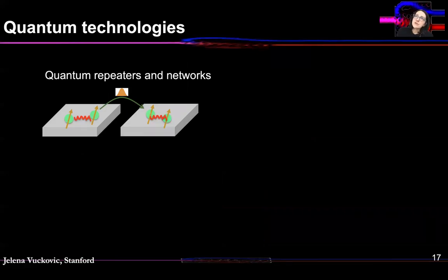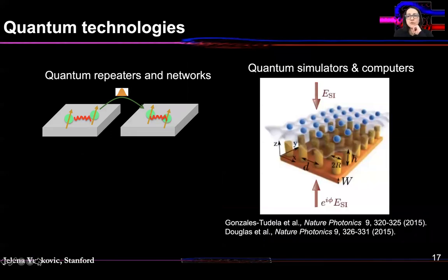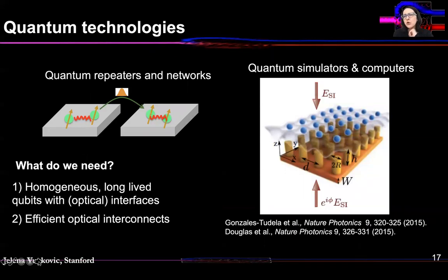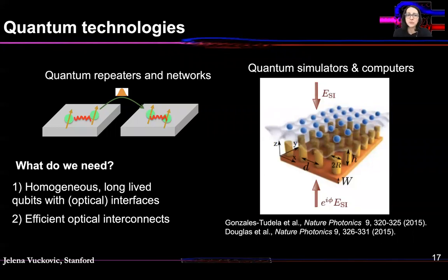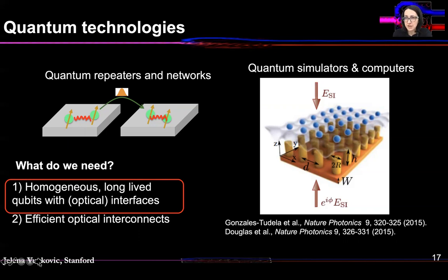Now I'd like to shift gears and spend the rest of my talk on using inverse design to build practical quantum photonics. There is a lot of interest in quantum technologies for quantum computers, quantum networks, quantum simulators, and quantum sensors. To implement all of these technologies, you need homogeneous, long-lived qubits with good interfaces — preferably optical interfaces — and you need to interconnect them efficiently using optical interconnections, to eventually enable building larger networks. I will describe how we plan to build scalable quantum technologies using semiconductor platforms.